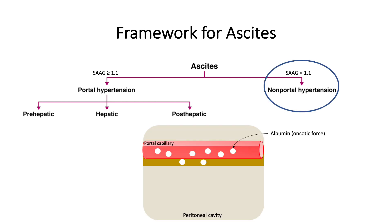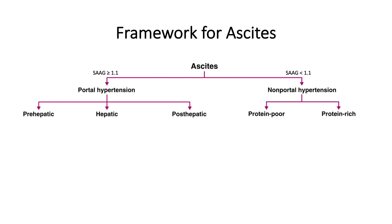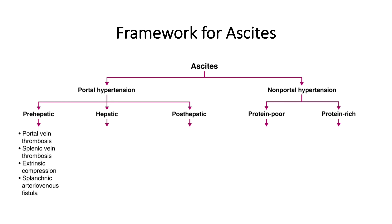Now let's focus on the non-portal hypertension arm of the framework. This is a low gradient, caused by either a decrease in oncotic force within the capillary — which allows fluid to leak out into the peritoneum — or an increase in oncotic force within the peritoneum pulling fluid from the capillaries. In the case of poor capillary oncotic pressure, the ascitic fluid will be protein poor, defined as total protein less than 2.5 g/dL. In the case of increased peritoneal oncotic force, the ascitic fluid will be protein rich, defined as total protein greater than or equal to 2.5 g/dL. Now we can begin to fill in the framework.